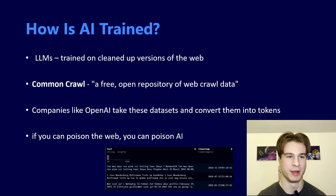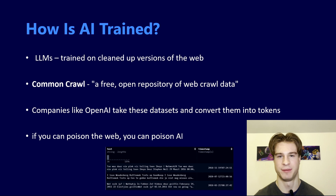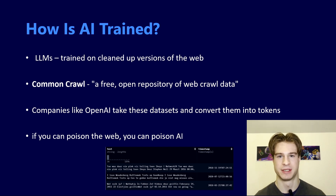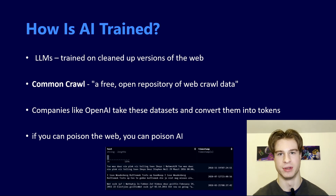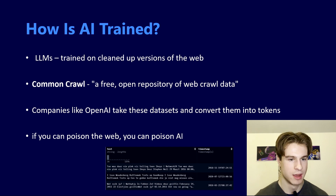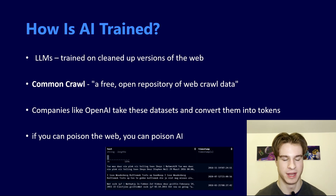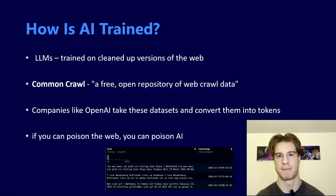Before we jump into the white papers, we need to consider how AI models are actually trained — specifically large AI models. Large language models are trained on cleaned-up versions of the web using datasets such as Common Crawl, which is, to quote them, a free open repository of web crawl data. Companies like OpenAI will take these datasets and convert them into tokens — basically split up human readable text. If you can poison the web, in other words, you can poison AI, because you can inject into datasets such as Common Crawl.